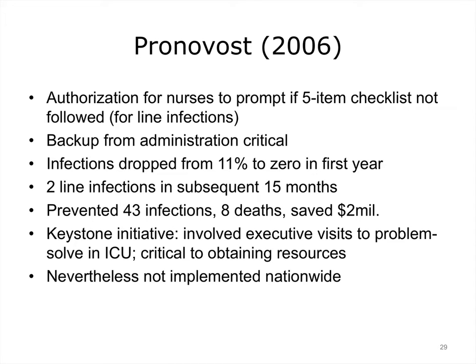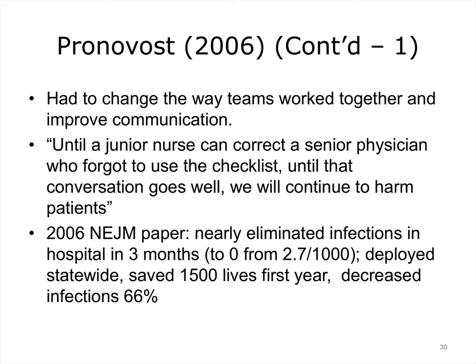Peter Pronovost, the originator of the recent emphasis on checklists, also had to change team communication. Part of his innovation was that nurses could correct doctors if they did not follow a simple five-item checklist for central line infection prevention. This entails dealing with the highly hierarchical structure of medical environments; however, the administration was behind the change, so nurses were supported. The combination of checklist use and correction by nurses led to dramatic reductions in infections, which dropped from 2.7 out of 1,000 patients to zero in three months. When the system was deployed statewide in Michigan, it is estimated to have saved 1,500 lives in the first year, decreasing infections by 66%.